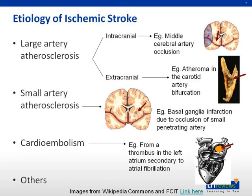Cardioembolic stroke is due to a cardiac thrombus embolizing to cause cerebral arterial obstruction. Sources of cardioembolism include atrial fibrillation, mechanical prosthetic valves, poor cardiac ejection fraction, and valvular heart disease. Other known but less common etiologies of ischemic stroke are autoimmune diseases like systemic lupus erythematosus, hypercoagulable or prothrombotic conditions, and arterial dissection.